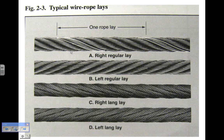The difference between regular lay and lang lay: right and left just refer to the direction the strands are running, while regular and lang have to do with the angle of the individual wires. In regular lay, the wires are roughly parallel to the axis of the rope itself, whereas in lang lay the wires are at various angles.